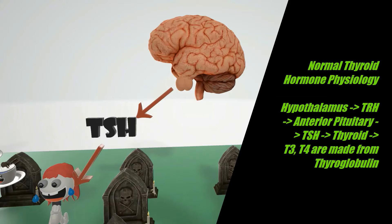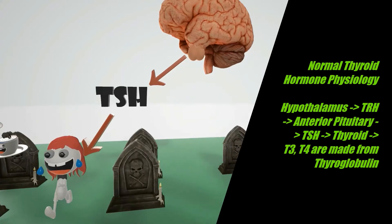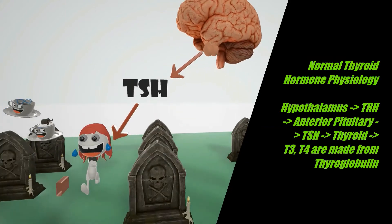We see thyroid stimulating hormone (TSH) coming out of the anterior pituitary. TSH then goes to the thyroid and tells the follicular cells of the thyroid gland to produce T3 and T4 from thyroglobulin. T3 and T4 are released into the blood, travel around the whole body, and cause lots of effects — they increase the metabolic rate, cardiac output, and the rate of the sympathetic nervous system.